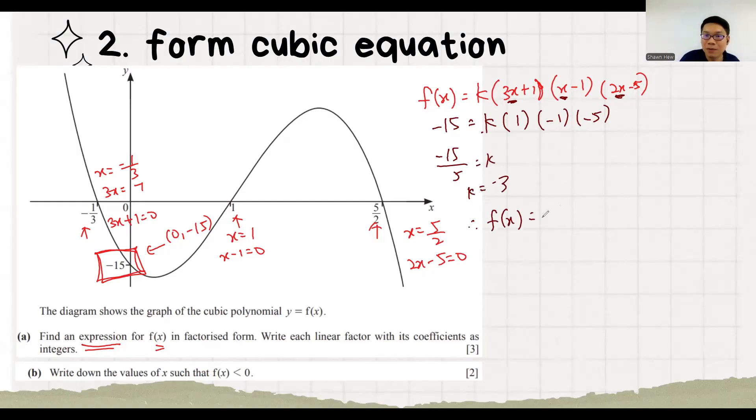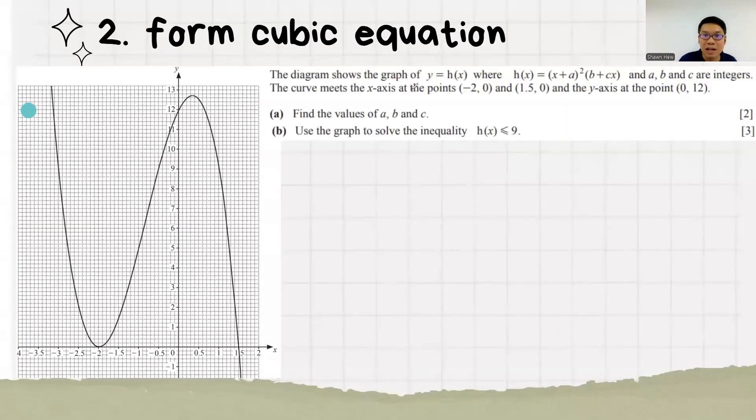Then we can confirm my fx is minus 3. Then part b, write down the value of x such that fx is less than 0. So again, we draw the horizontal line y equals 0. So below it is this region and this region. So we can confirm x is in between minus 1 over 3 and 1. And do not have the equal symbol because my question don't have this equal symbol. And then next part is more than 5 over 2.